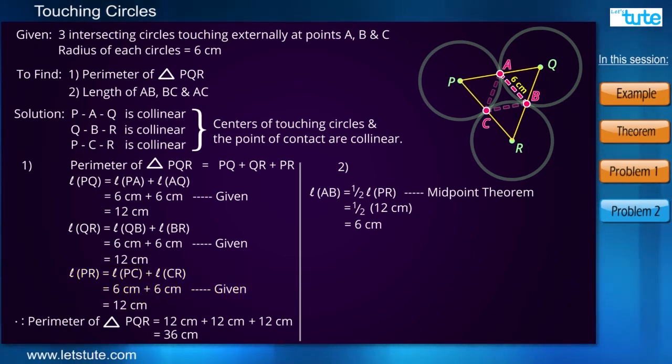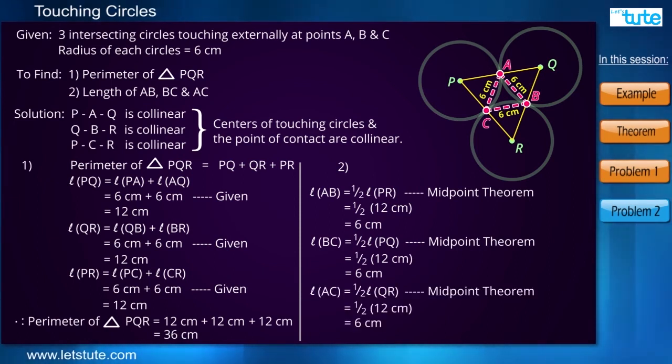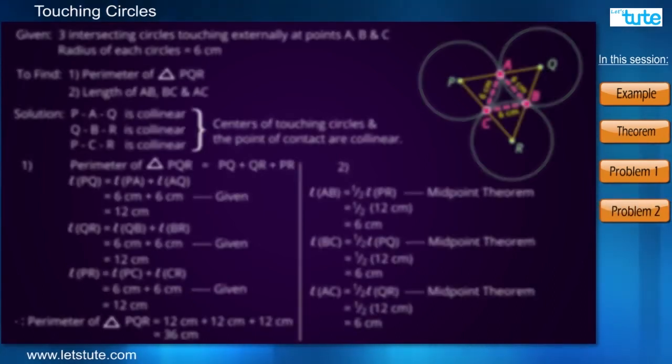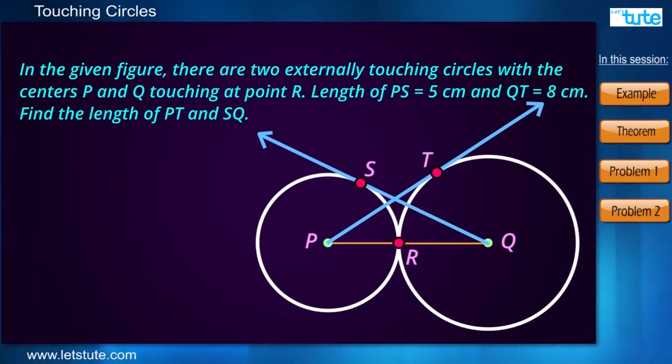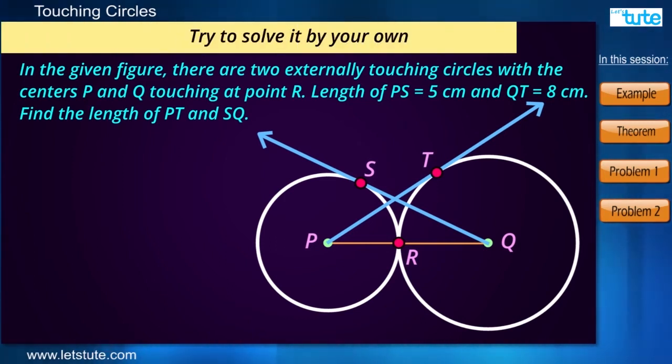Now in the similar manner, we can find the measure of BC and AC. Here we are done with our first problem. Now let's have a look at the second problem. Well, I won't be solving this entire problem, but I'll just give you an overview and I'm sure you can solve it by your own.